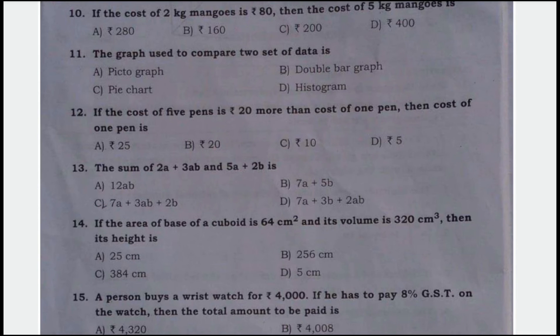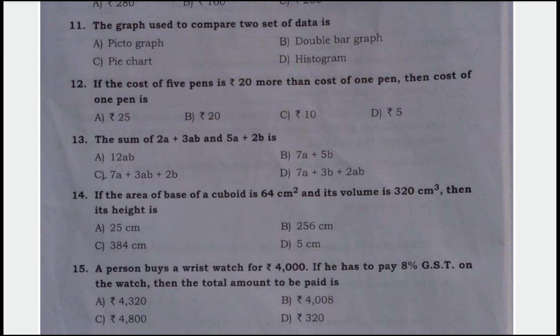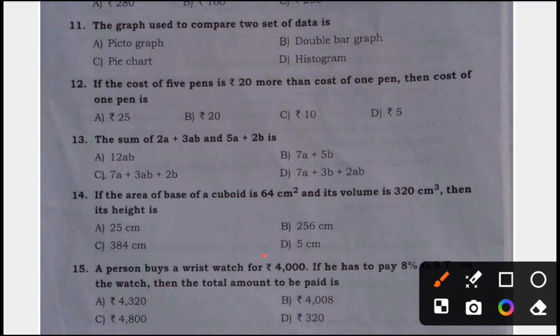14th question. If the area of the base of a cuboid is 64 cm square and its volume is 320 cm cube, then its height is, the answer is option D, 5 cm. Next.